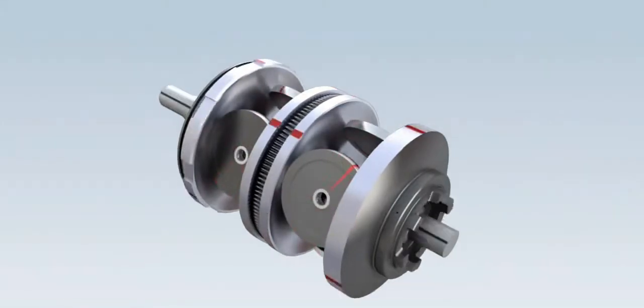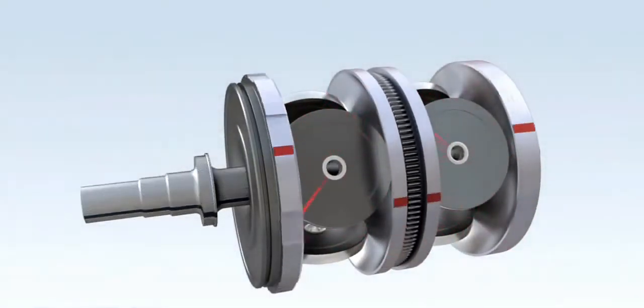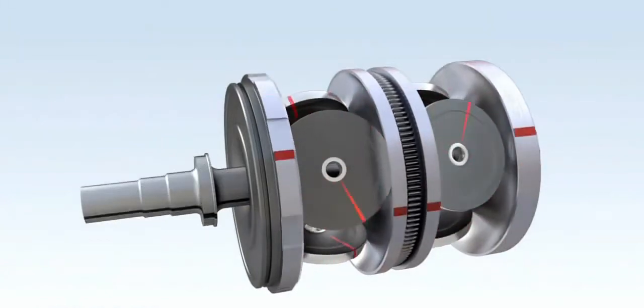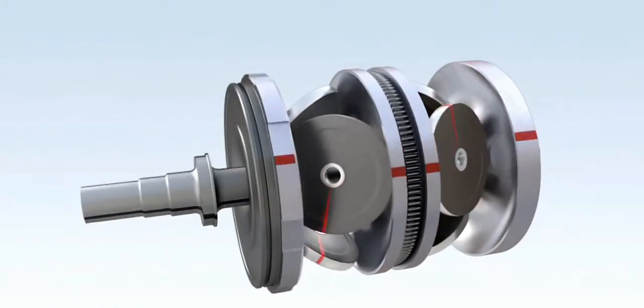The rollers are positioned in the toroidal cavities formed between each pair of opposing discs. In this case, there are three rollers in each cavity.